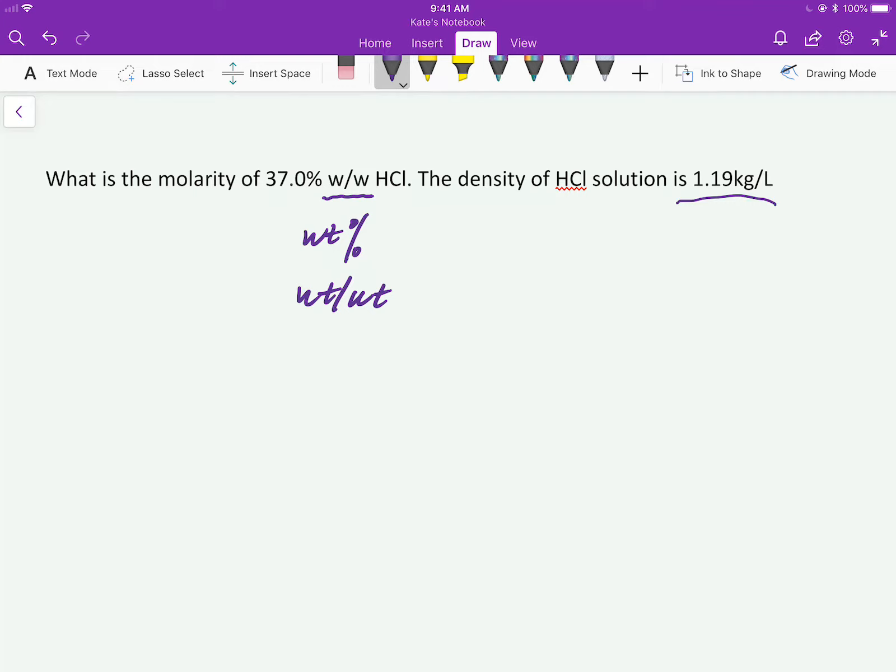And sometimes it's volume percent, which can mean volume over volume, unless it's saying weight over volume. It has all different symbols. Anyway, in this case, w over w means weight percent.